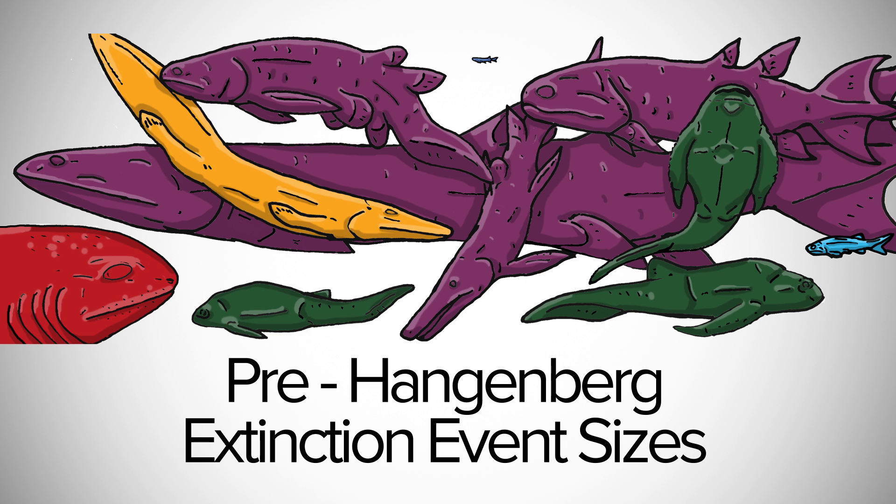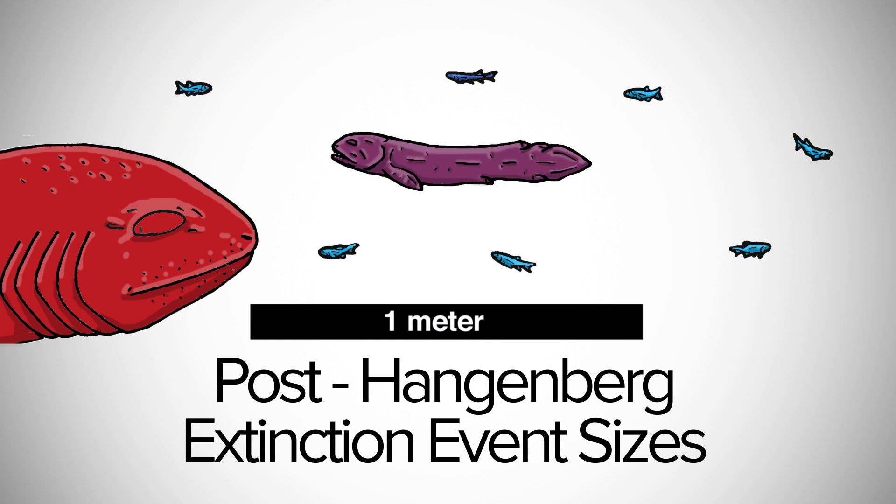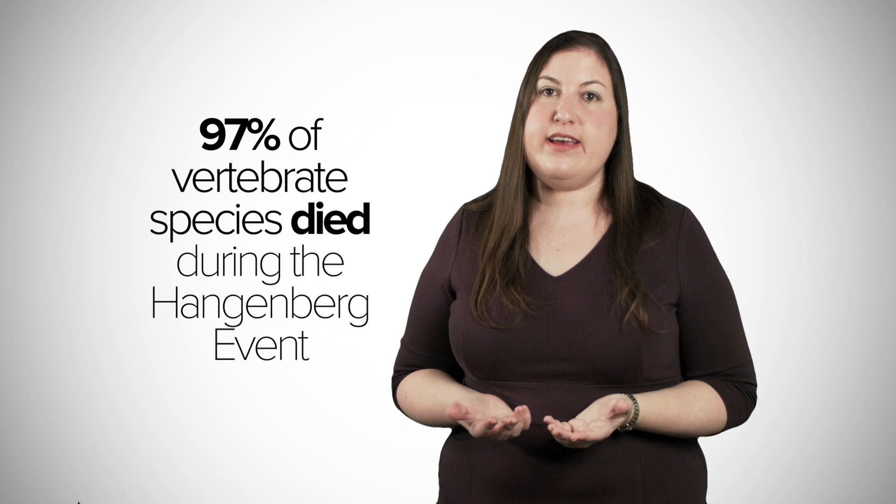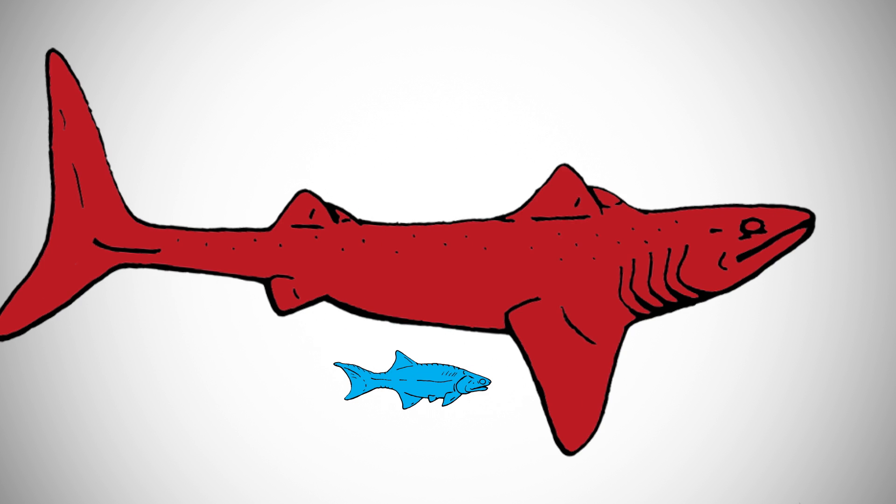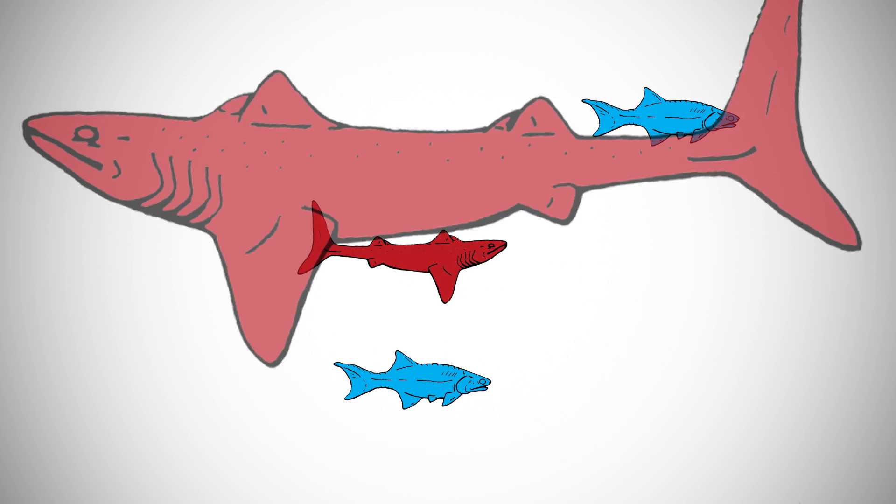Sizes changed during the Hangenberg extinction event, 359 million years ago. 97% of vertebrate species died. Fish shrunk down to the size of a sardine and apex predator sharks to nearly that size. They stayed that way for over 40 million years.